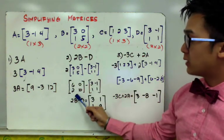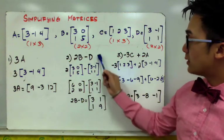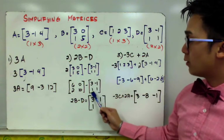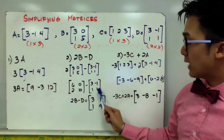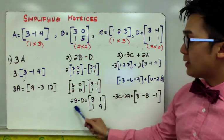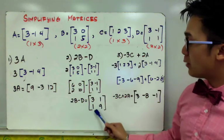and you'll have 6, 0, 2, and 10, minus matrix D, which has 3, negative 1, 1, and 1 as their entries. So 2B minus D will give us 3, 1, 1, 9.